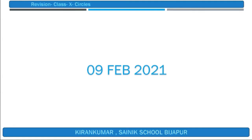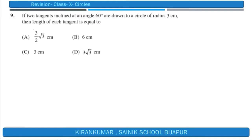Hello students, let us continue the session on revision in the chapter Circles. In the previous session we had discussed till question 8. Question 9 is: if two tangents inclined at an angle of 60 degrees are drawn to a circle of radius 3 centimeters, then the length of each tangent is equal to. Let us draw the suitable figure for that.